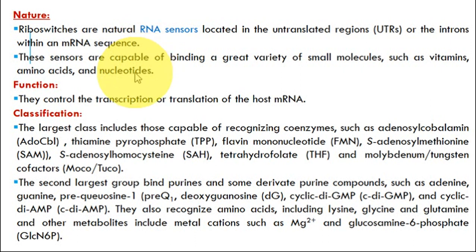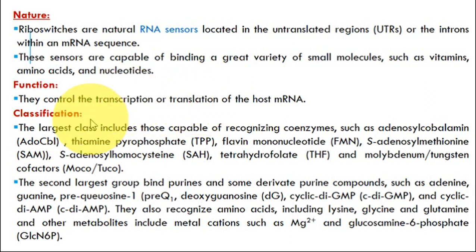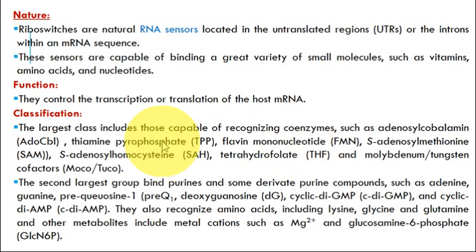What is their function? They control the transcription or translation of the host mRNA. These riboswitches are classified basically into the largest class and the second largest class. The largest class includes various coenzymes such as adenosylcobalamin, thiamine pyrophosphate, flavin mononucleotide, S-adenosylmethionine, S-adenosylhomocysteine.